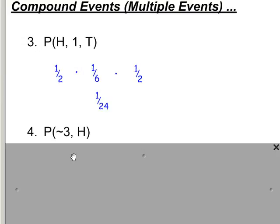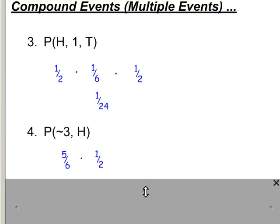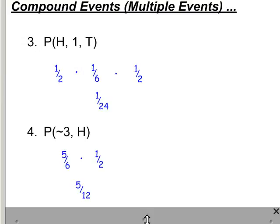Last question — let's throw in the complement idea. This symbol means complement, which means 'not.' The question asks: what's the probability that when you roll a die you do not get three, and then flip a coin and get heads? Not three means there are five numbers on the die that are not three, so it's a five-in-six chance. Getting heads is a one-in-two chance. So five-sixths times one-half gives us a five-twelfths chance.